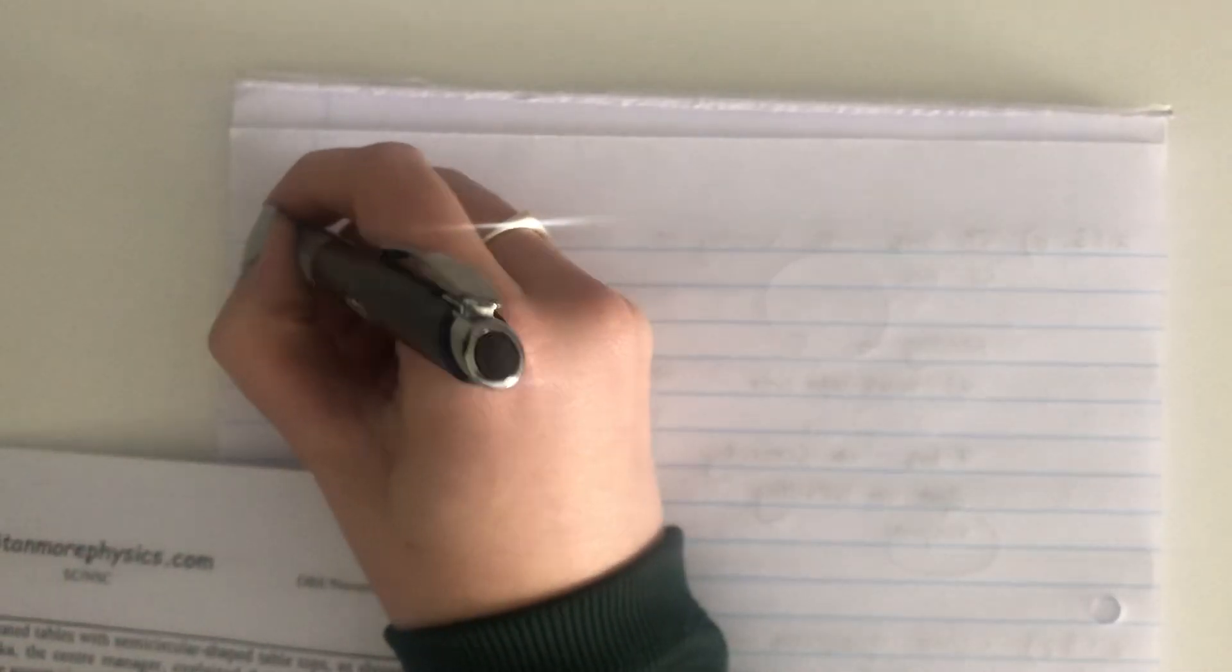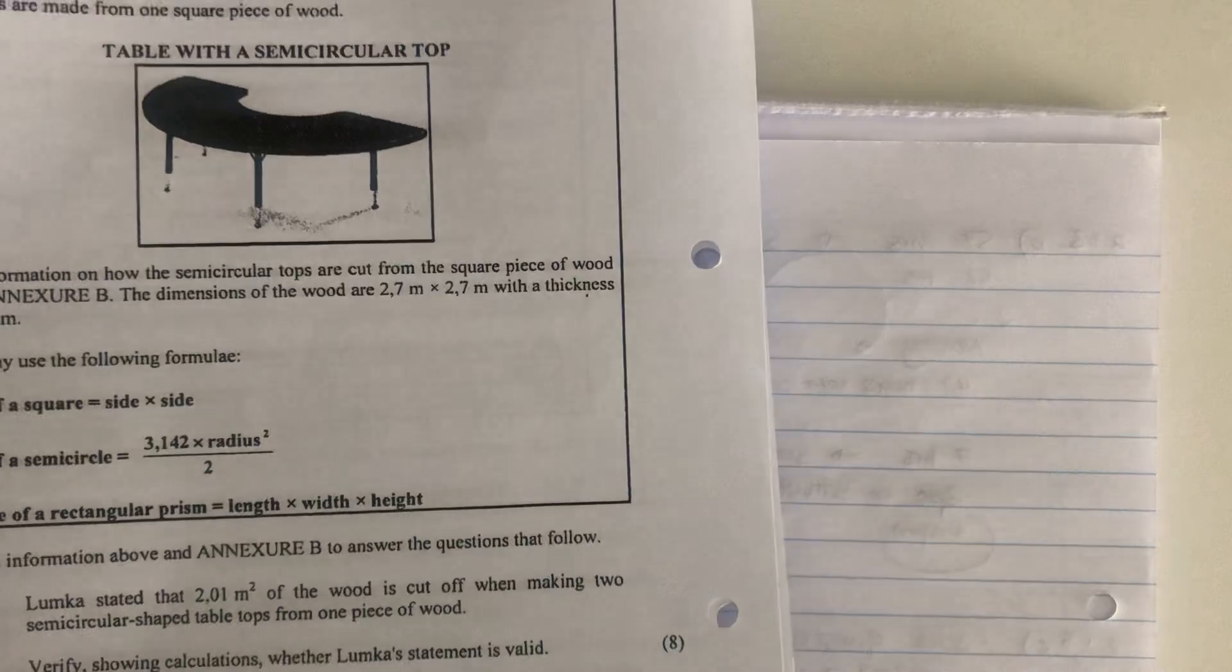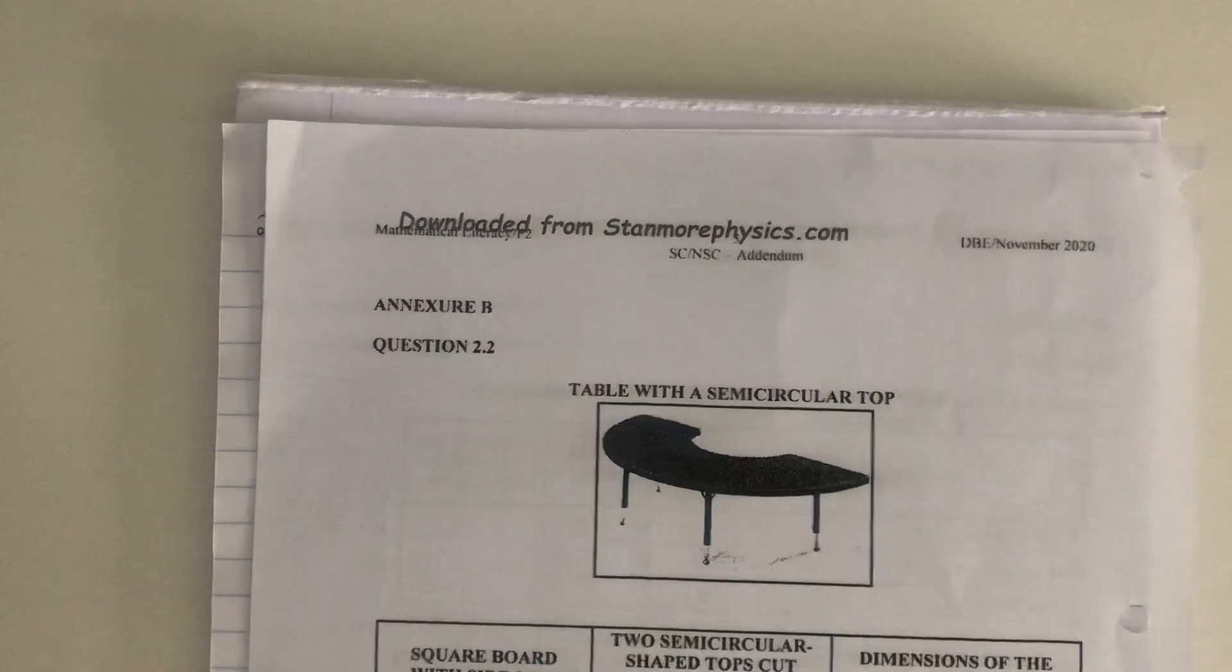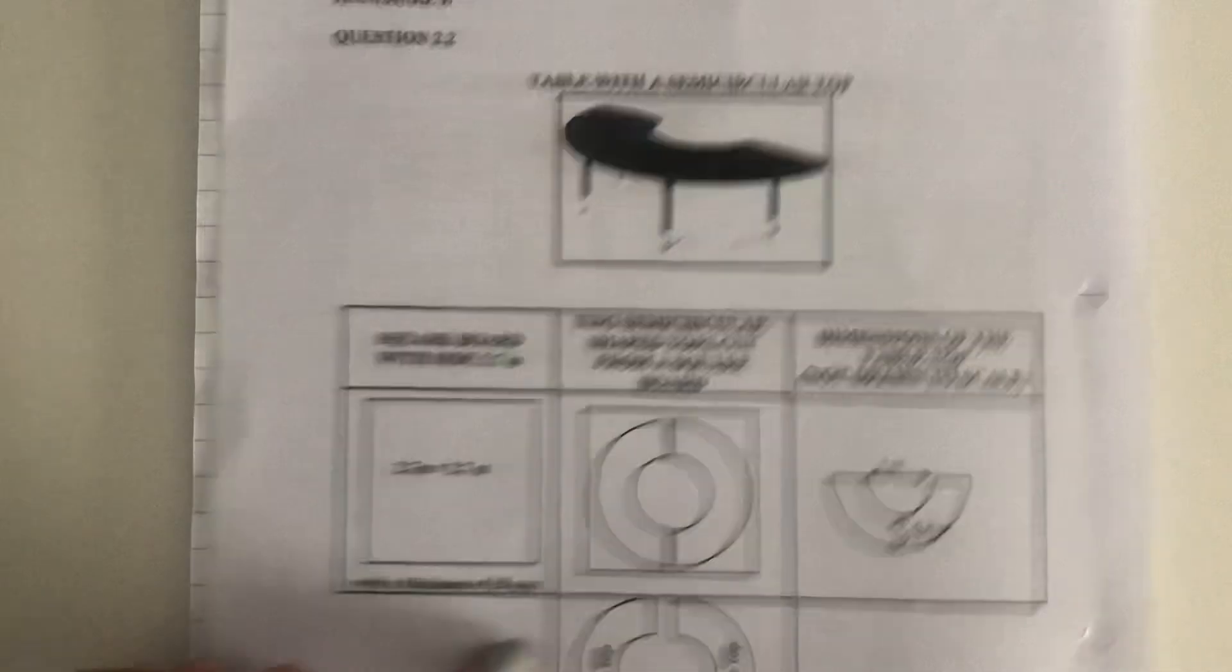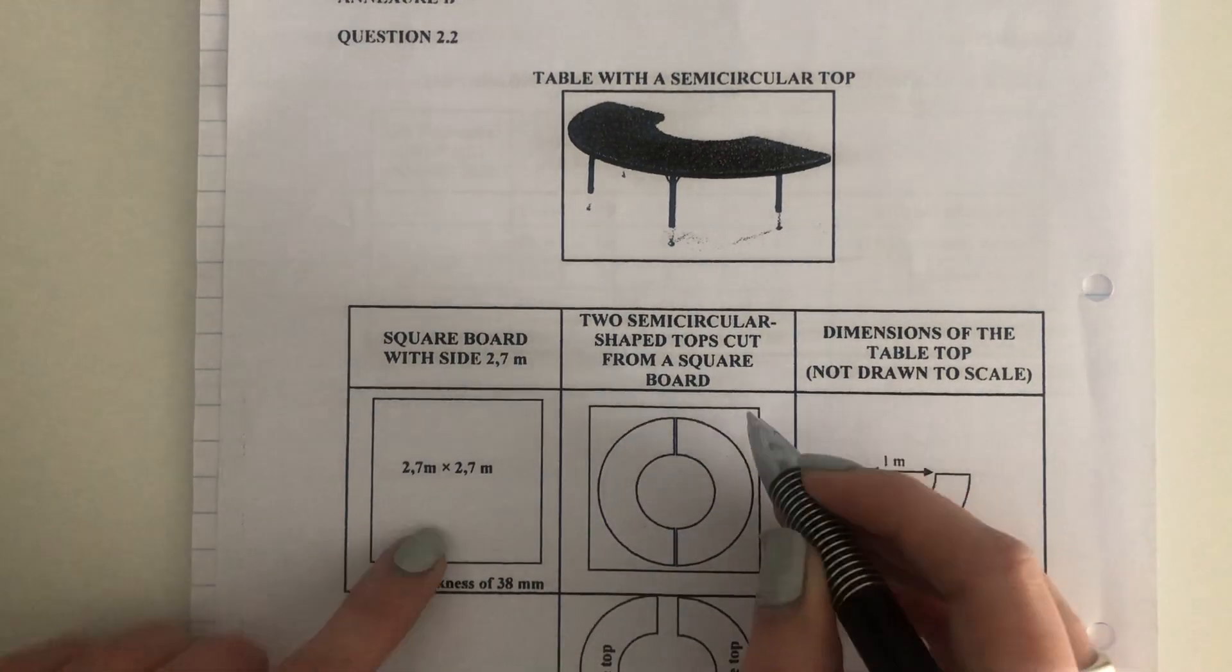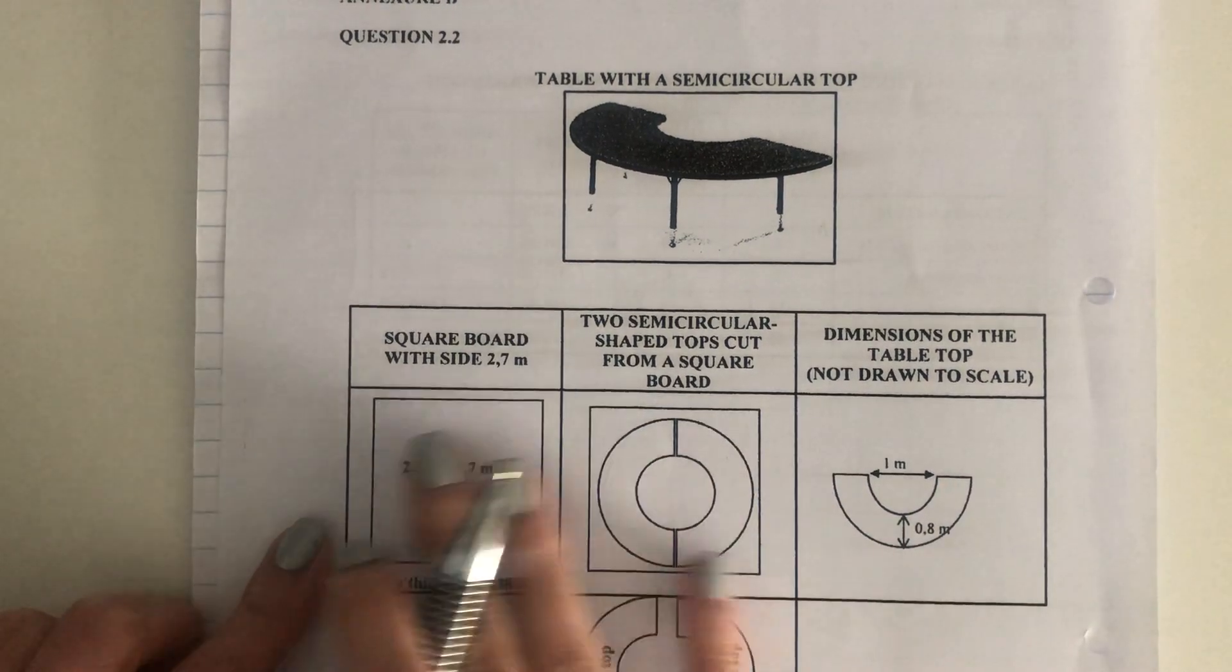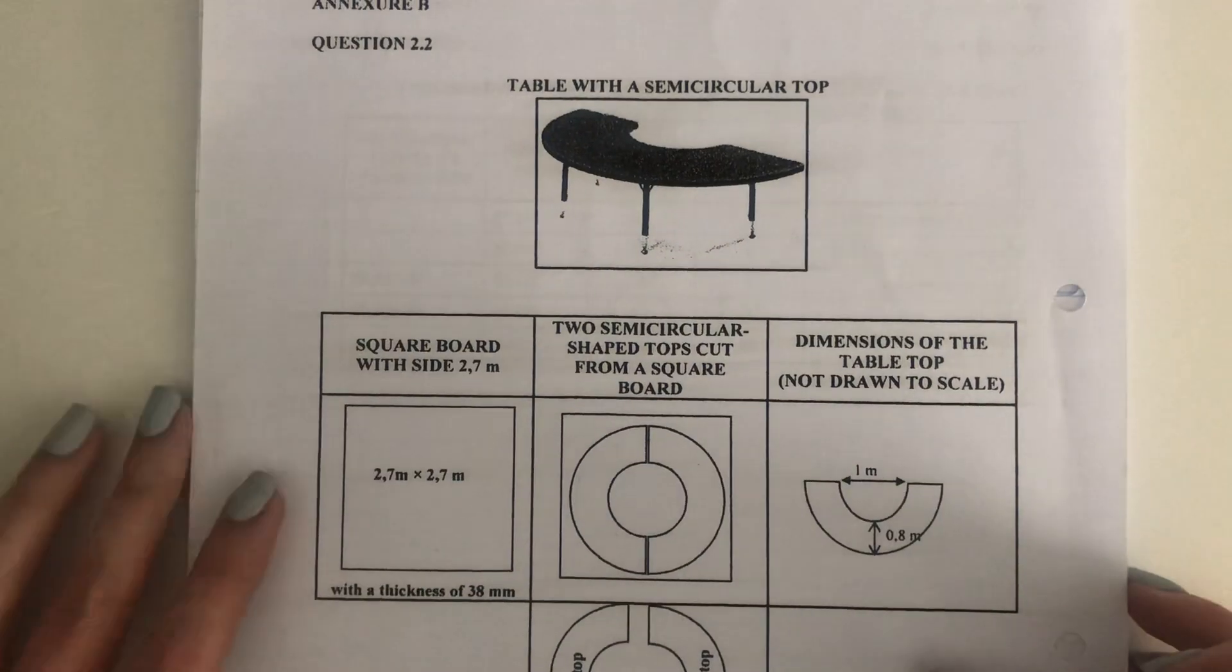We basically have to do a calculation, say, if they make these two tabletops from this piece of wood, how much wood is going to be not with those tabletops, so basically cut off? And is it this much? And if it is this much, that's great. And if it isn't, we must say, Lumka, sorry, you're wrong. But we have to do those calculations.